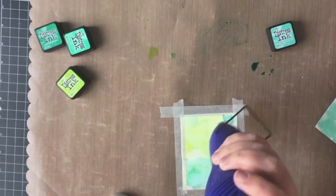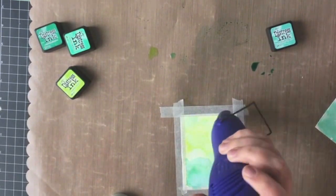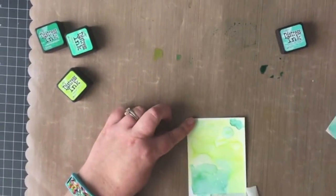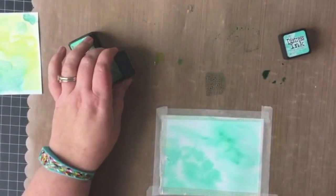When you're watercoloring if you go in with layers like this, drying things in between your coats, that's really what's going to give you that beautiful variegated look.